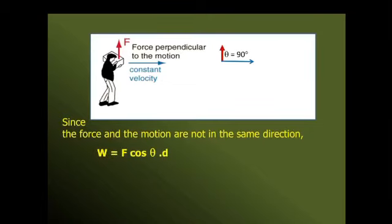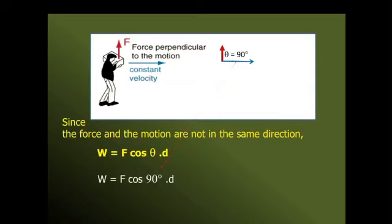If the angle is 180°, we have to use the formula W = F×D×cos180°. We have to use cosθ. The formula gives W = F×D×cosθ.